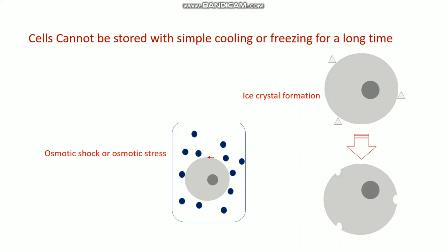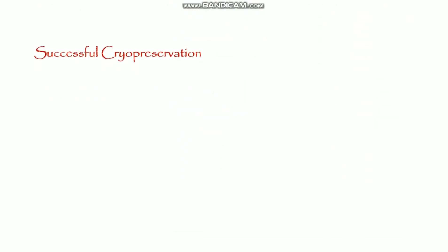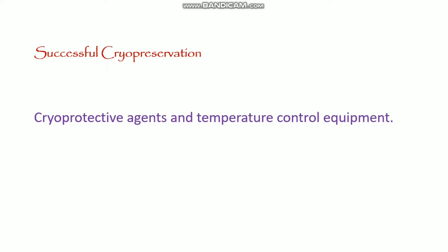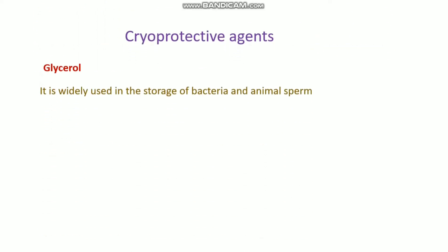For cryopreservation there are different kinds of cooling processes, and some special agents known as cryoprotective agents are used to prevent ice crystal formation. The cryoprotective agents used during cryopreservation include glycerol, which is widely used in the storage of bacteria and animal sperm specifically.